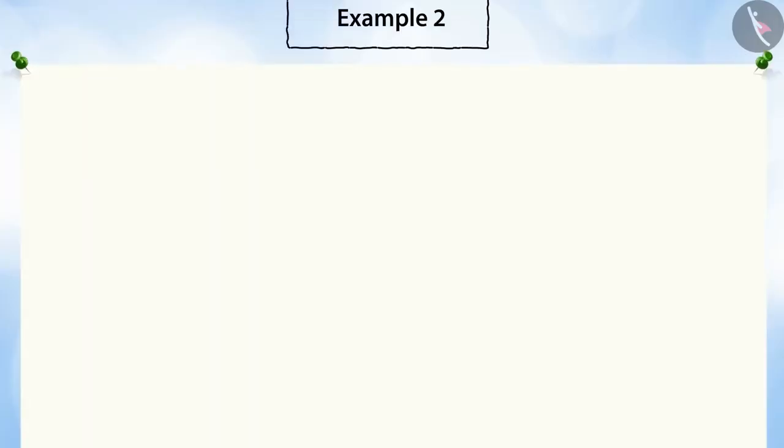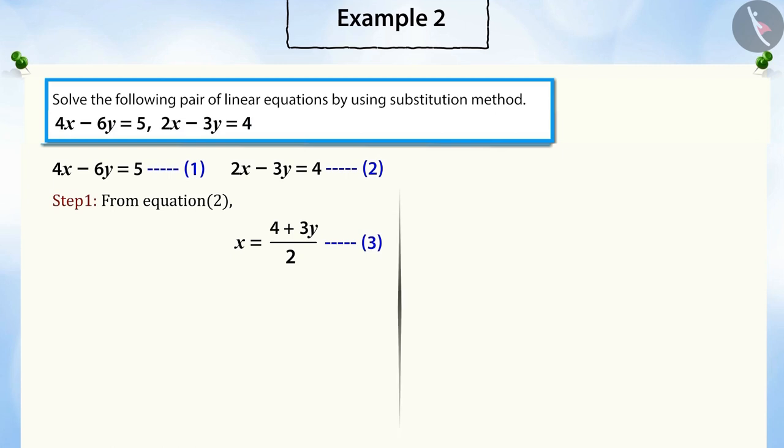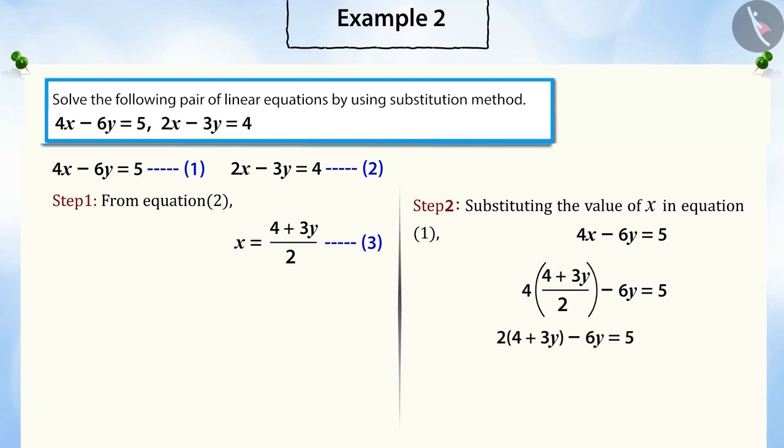Let's look at another example. Solve the following pair of linear equations by using the substitution method. First of all, let's take equation 2 and write x in terms of y. Now, substitute this value of x in equation 1. And on solving, we get an incorrect equation without a variable.